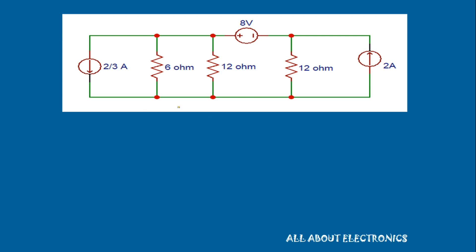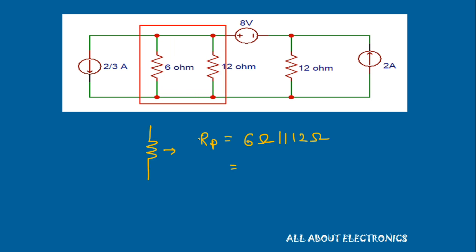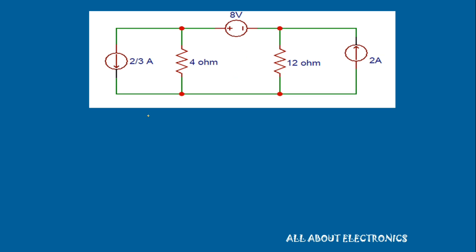Now we have the 6Ω and 12Ω resistors in parallel. The equivalent resistance Rp = (6 × 12) / (6 + 12) = 72 / 18 = 4Ω. We can replace these two resistances by their equivalent parallel resistance, so the equivalent circuit now has a 2/3 A current source with a 4Ω resistor in parallel.